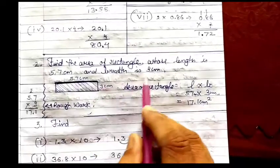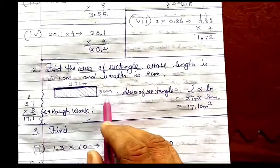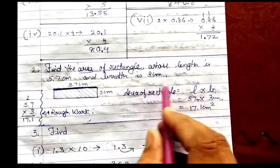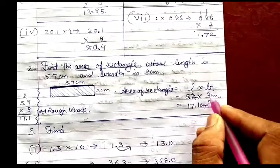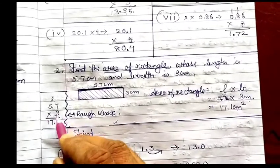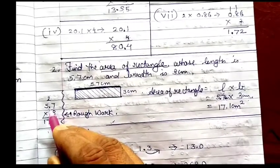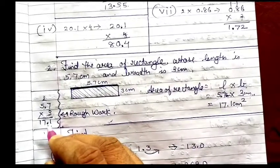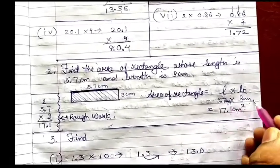Question number 2: Find the area of the rectangle whose length is 5.7 cm and breadth is 3 cm. The area of rectangle is length into breadth. So area = 5.7 into 3. 3 sevens are 21, carry 2. 3 fives are 15, plus 2 is 17. After 1 decimal digit, leave 1 digit in the answer and place the decimal. So area of rectangle is 17.1 cm square, because cm into cm gives cm square.